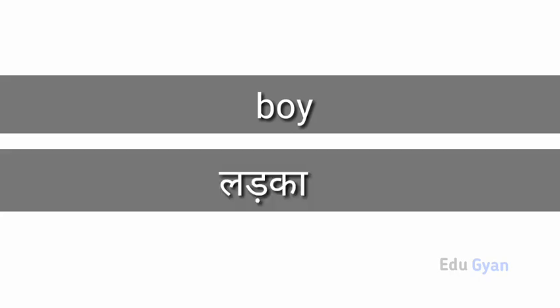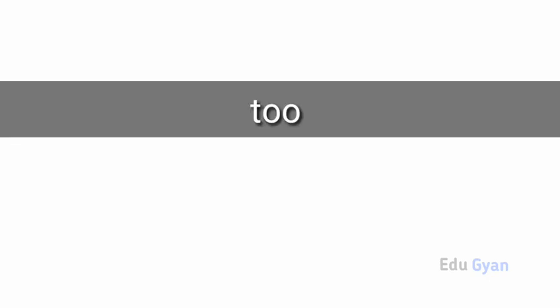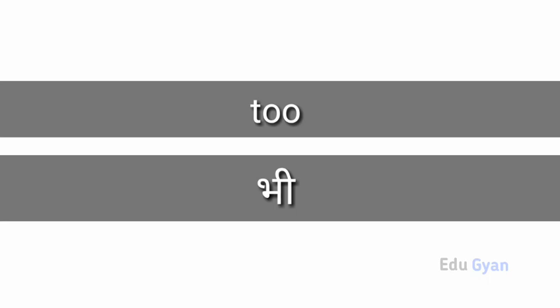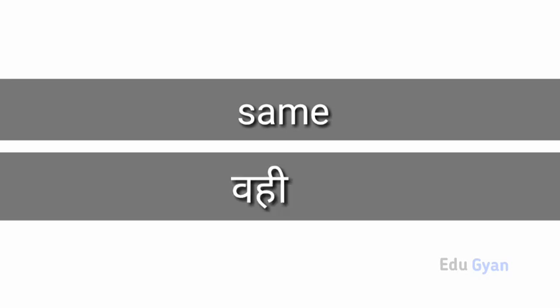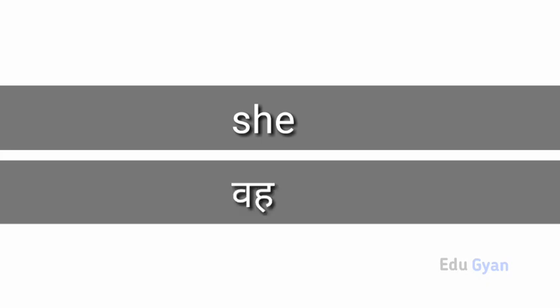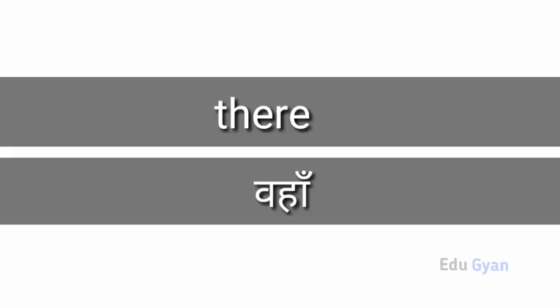Boy. Boy means ladka. Old means purana. To means b. Same means vahi. See means vah. All means sub. There means vaha.